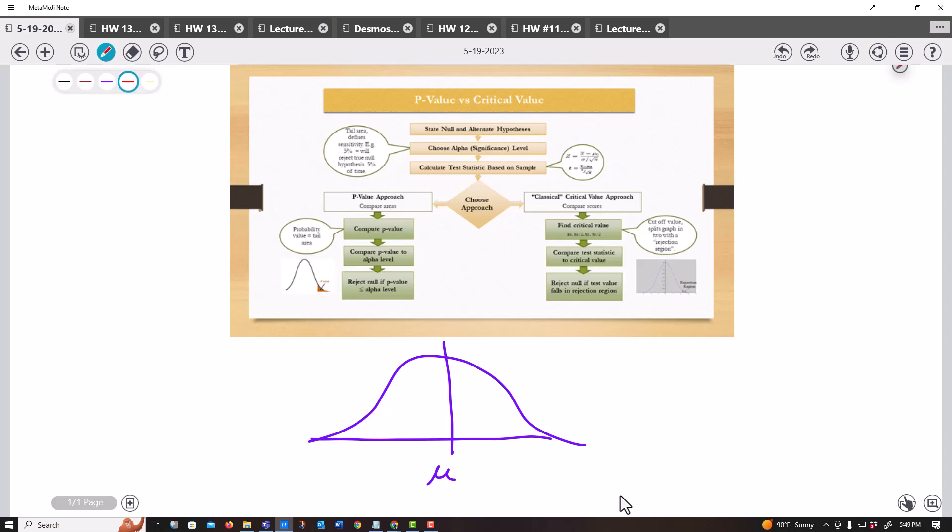Well, who decides what's close enough? That's where either the p-value or the critical value comes in. Most people like the p-value because all a p-value is is the probability I believe the null.